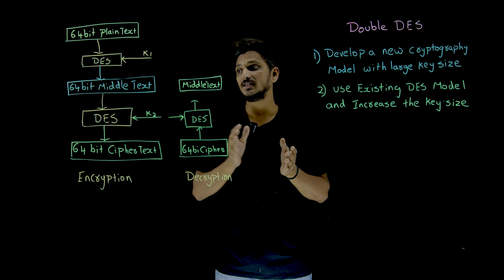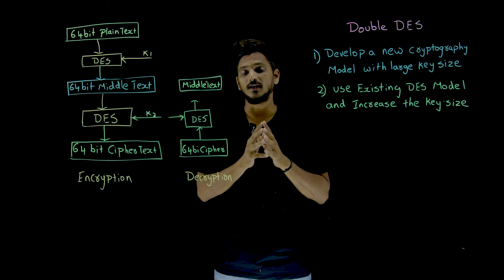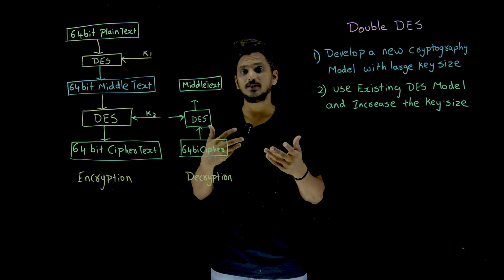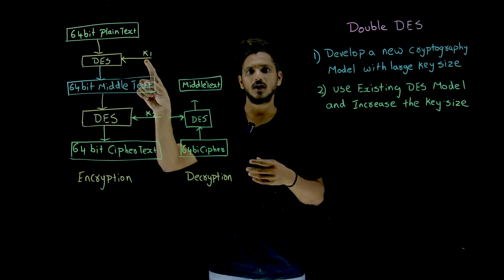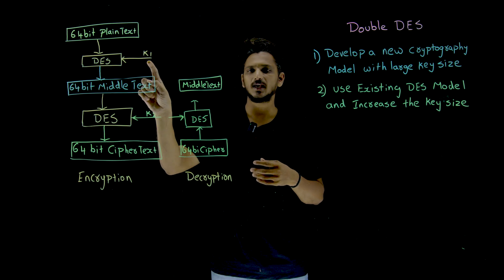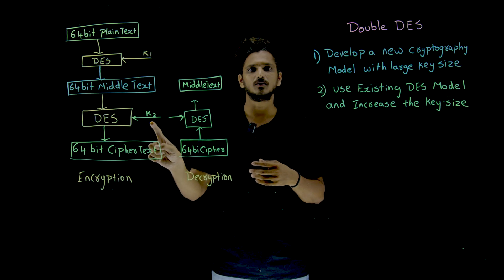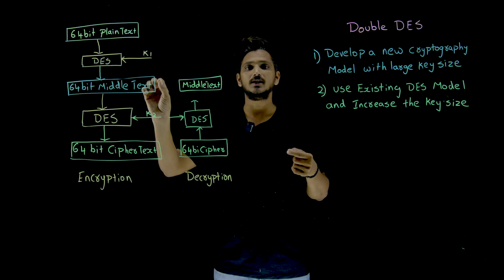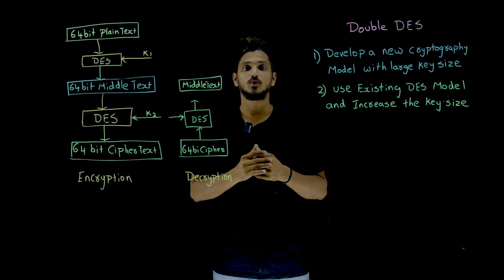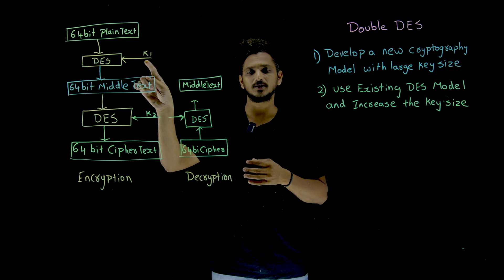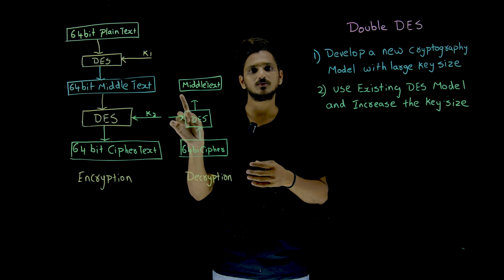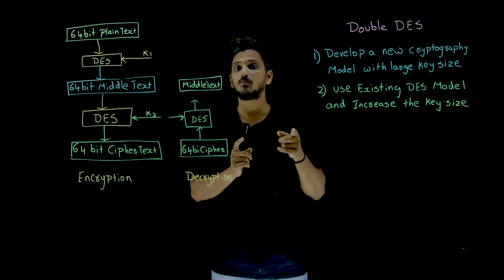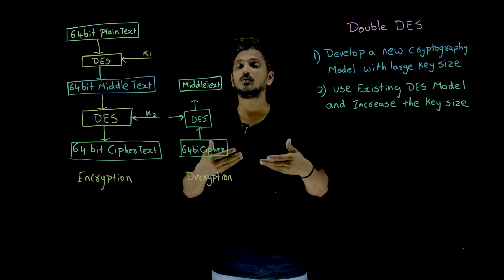How does the key size increase in double DES? If you want to hack the key, you need to hack two keys: K1 and K2. You take one key from K1 and test all 2 power 56 possibilities in K2, then take the second key in K1 and test all the possibilities in K2. That is how you find which K1 and K2 were used. So the total possibilities are 2 power 56 multiplied by 2 power 56, which equals 2 power 112 possibilities. That is how they improved the size of the key.